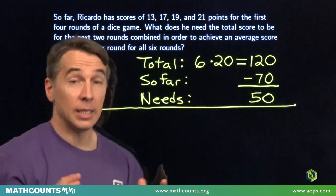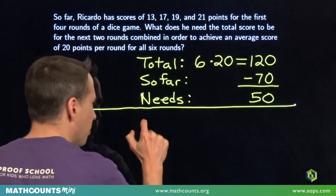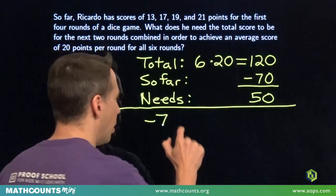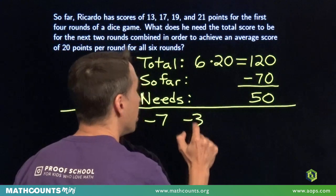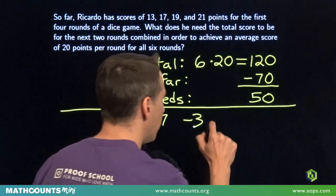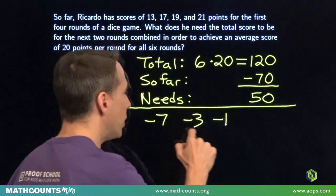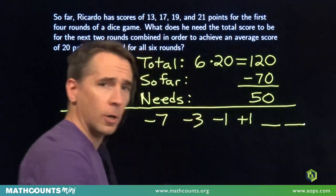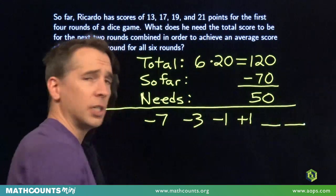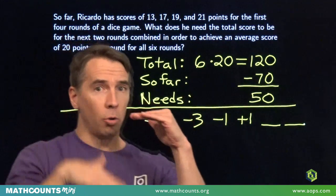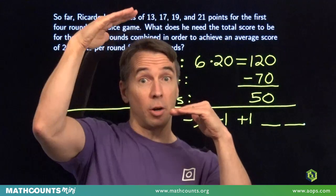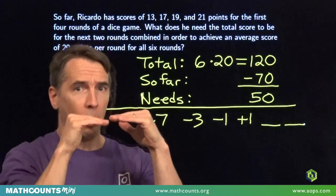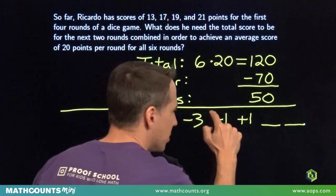This 13 is seven below 20. It's seven below the average that we want. 17 is three below our target average. 19 is one below. And 21 is one above. And then we need to throw in two more scores. Now, when we're finished here, the scores that are below the average need to balance the ones that are above average. And I see right away these two balance each other out. One below, one above. They cancel each other out.